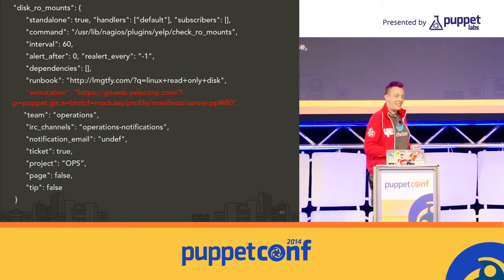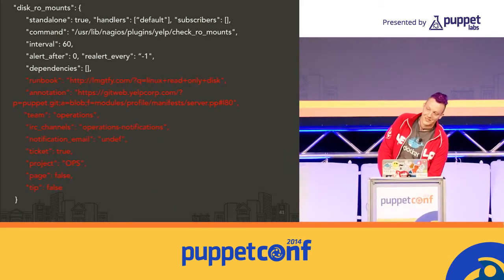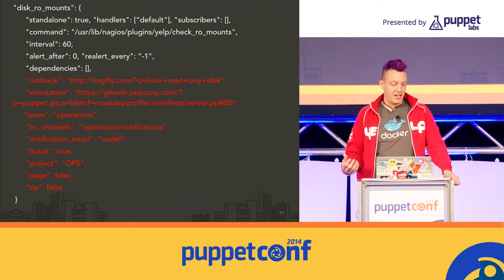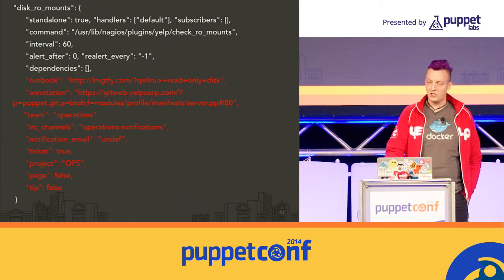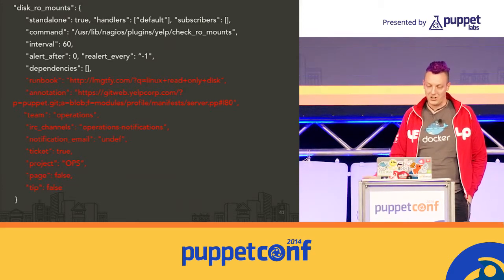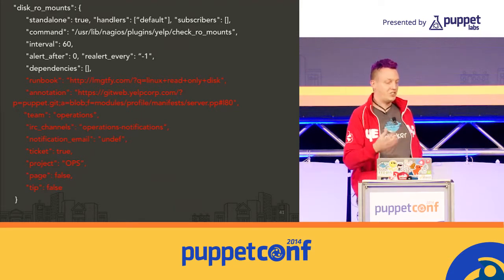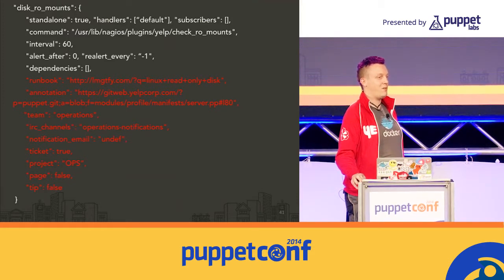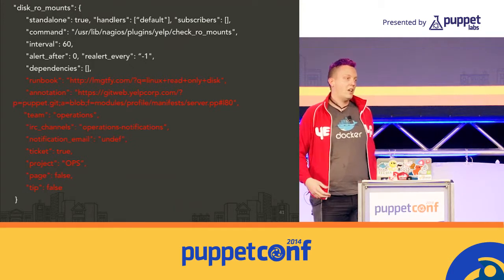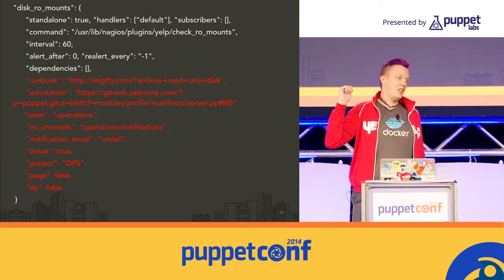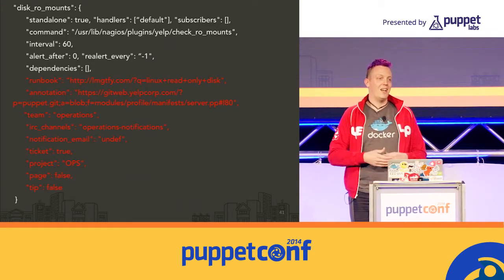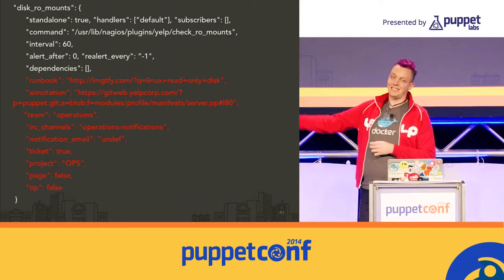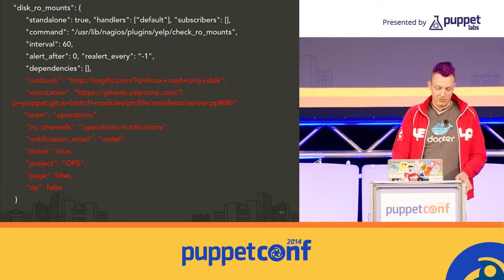More than half the data in a check is our custom extensions. Every alert has a team. Every alert has a bunch of flags: the project field for raising Jira tickets, what JIRA project to use, what IRC channel to shout about this in. If a monitoring system could do something useful, we just add it. Because the metadata is extensible, we can add things into the JSON even if nothing's paying attention to them yet. You can prototype the interface at one end, and then as a second step start doing something about it. That's been really useful for iterating.